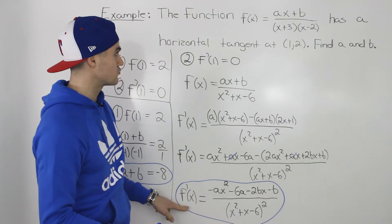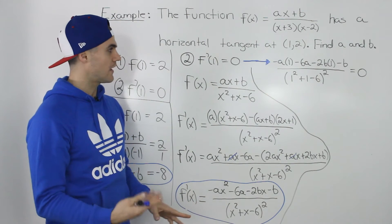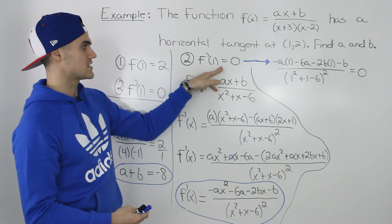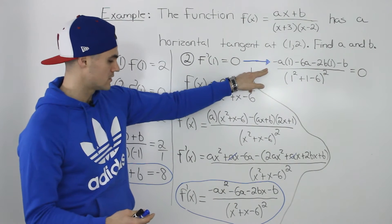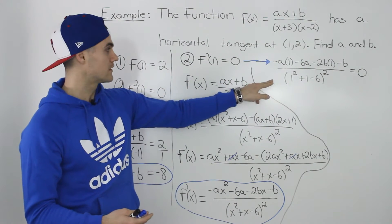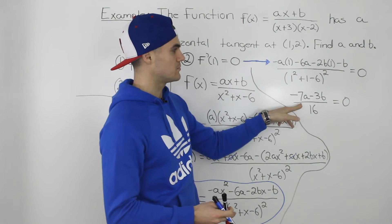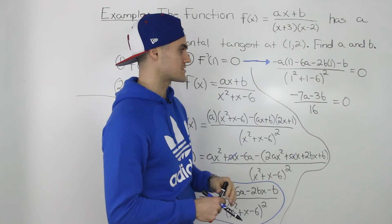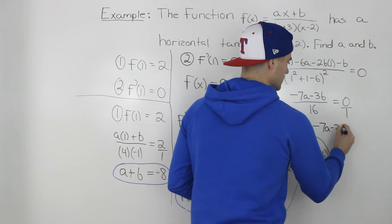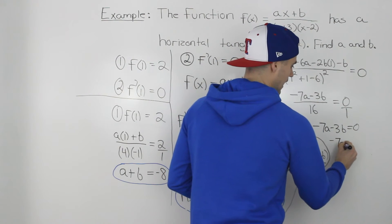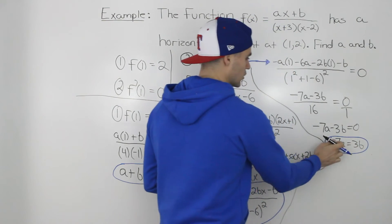This derivative in terms of x lets us apply our second equation, f'(1) = 0. Plugging x = 1 into the numerator and simplifying, collecting like terms gives -7a - 3b all over 16, equal to zero. Cross-multiplying: -7a - 3b = 0, or equivalently -7a = 3b. That is our second equation.